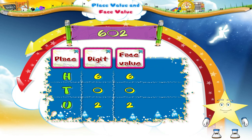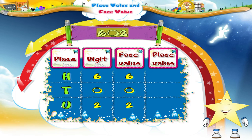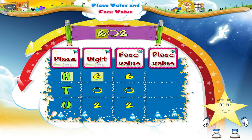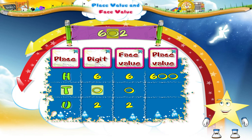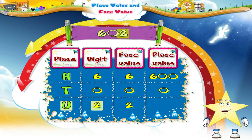Now let us see what is the place value of each of these digits. You know that six is in the hundreds place, so its place value is six hundred. Zero is in the tens place, so its place value is zero itself. And two is in the units place, so its place value is two.